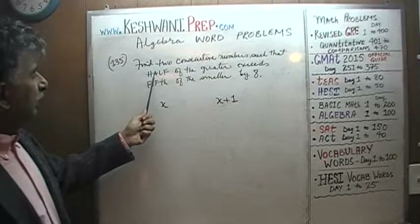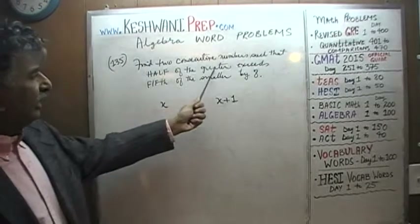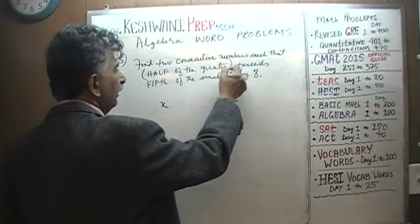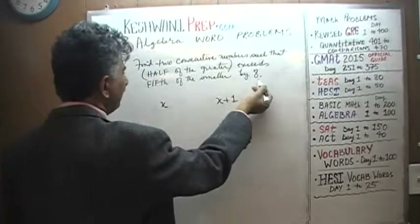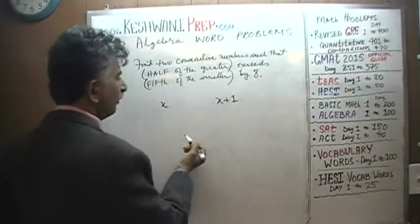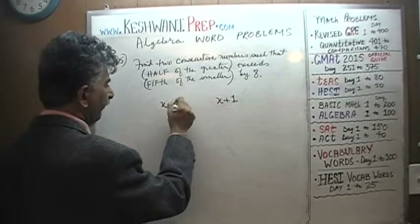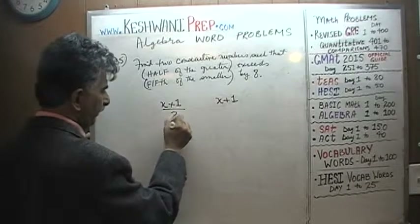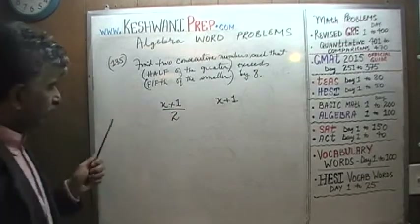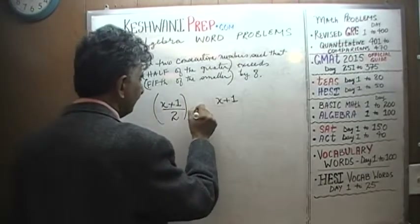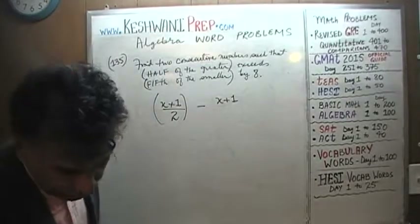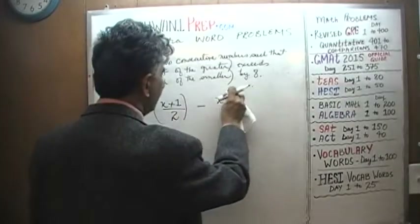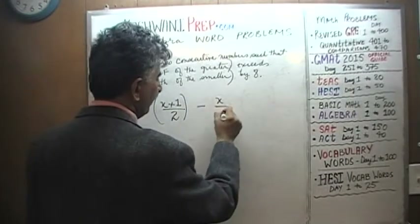They tell us that half of the greater one is more — how much more? It's eight more than the fifth of the smaller one. So we need half of the larger one: x plus one is the larger quantity. If you were to take a half of that quantity, it exceeds — in other words, it's more than the fifth of the smaller. The smaller one is simply x, and we take a fifth of that.